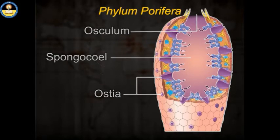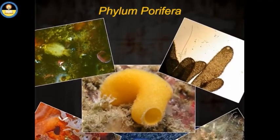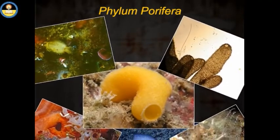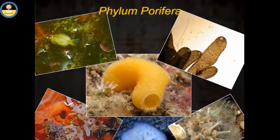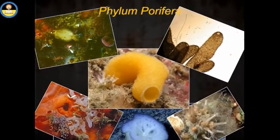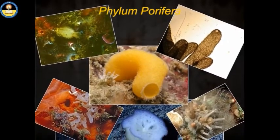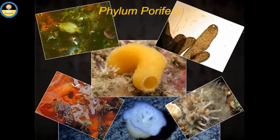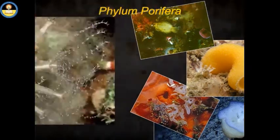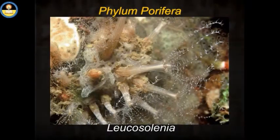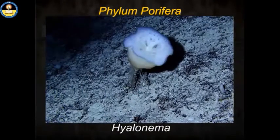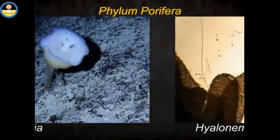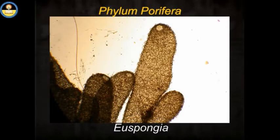They grow attached to a solid support and do not have any muscle cells, so their movement is rather limited. Examples of Porifera are Leucosolenia, Sycon, Hyalonema and Euspongia.